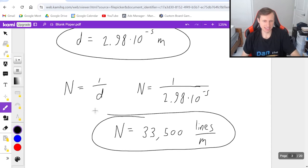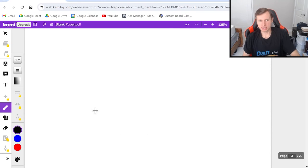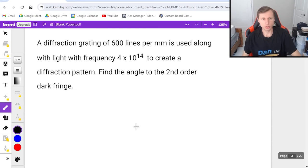But either way, we'll get an answer of 33,500, and that's lines per meter, which is a lot. That's a lot of lines. And yeah, that's basically it. Now we're going to do one more. It will be slightly harder, but let's see if you can solve this one on your own.